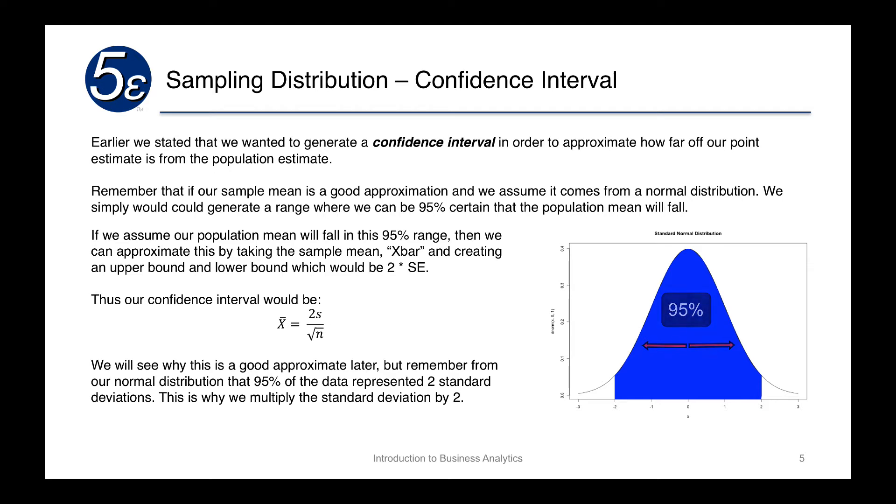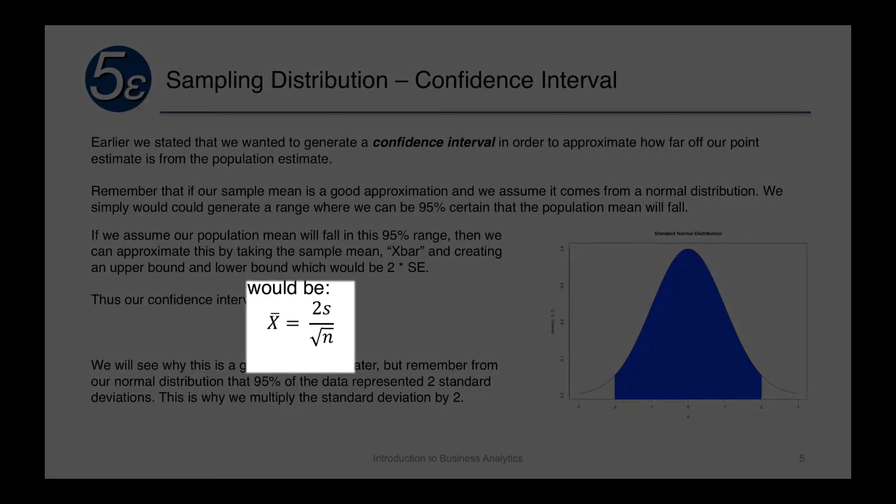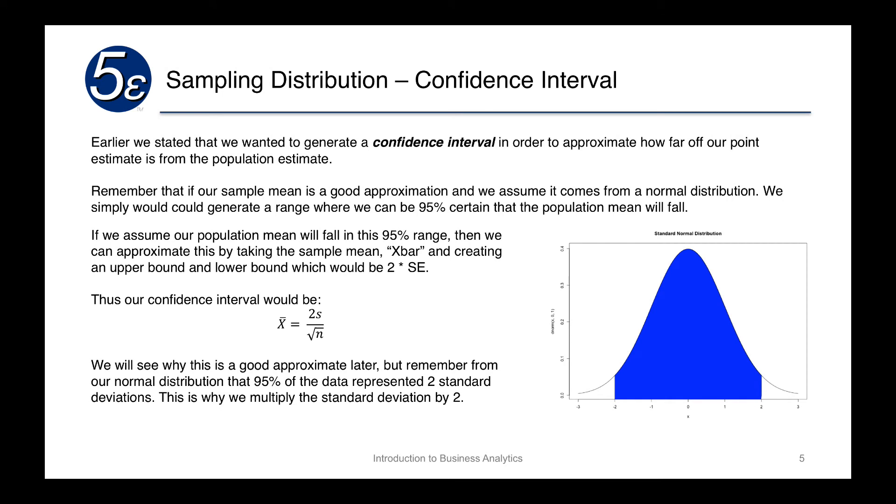So if that's the case, then our confidence interval would be given by 2 times s divided by the square root of n. And we will see why later that this is a good approximate, that the 2 is a good approximate. But remember, because it was 95% of the data that represented 2 standard deviations, this is why we're using 2 as a good approximation.